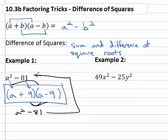Let's try a different example. 49x squared minus 25y squared. There's two terms, so I'm thinking shortcut. Can we take the square root of both? Yes.